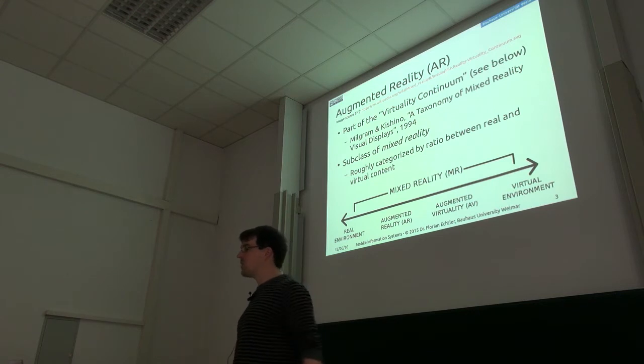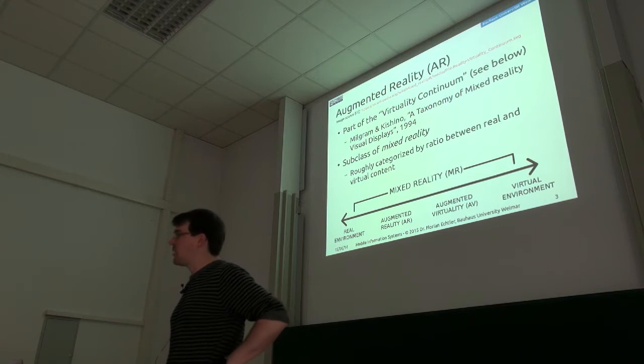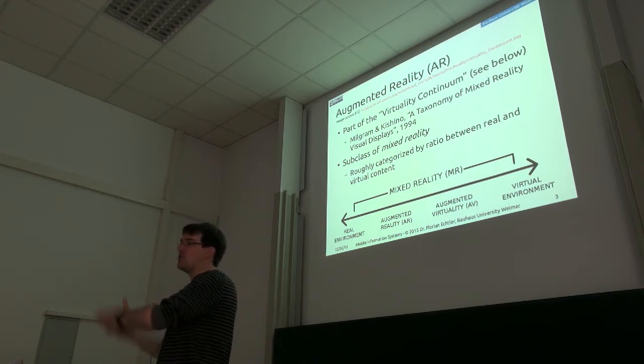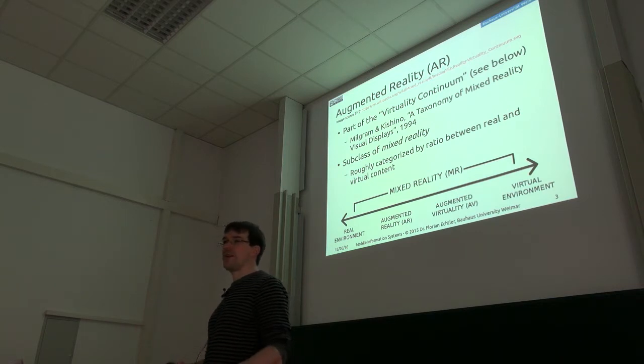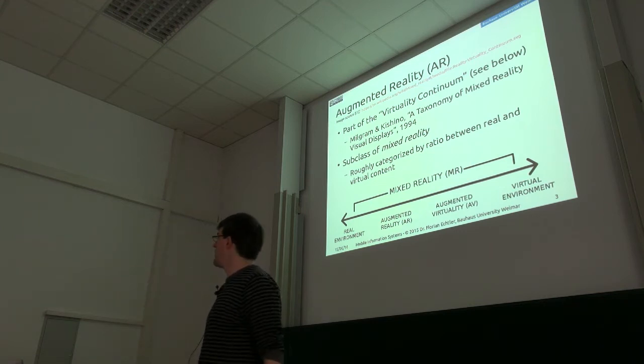So originally the idea of augmented reality comes from this so-called Milgram continuum, which is somewhere on the one extreme we have the real environment and on the other side we have a completely virtual environment. And somewhere in between we have a wide range of different types of mixed reality. And the rough difference of what type of mixed reality we're looking at is categorized by how much real content do we have and how much virtual content do we have.